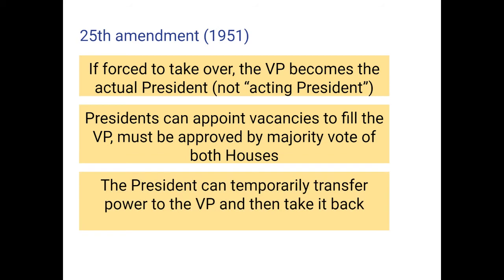The amendment also specifies that a president can temporarily transfer power to the vice president and then take it back. This could happen if a president was having a surgical procedure, would be under anesthesia, and wouldn't be able to make decisions. They would notify Congress that power is temporarily being transferred to the vice president, who would then have all the powers of an acting president. When the actual president was feeling better, power could be transferred back.